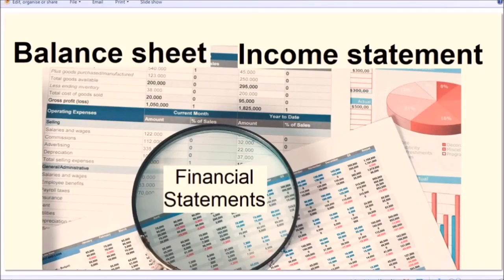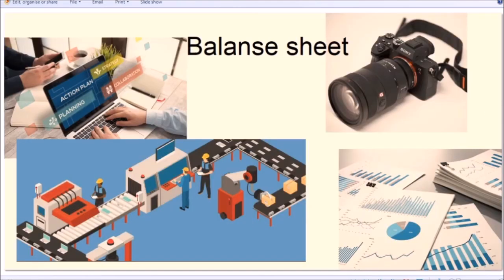The balance sheet and income statement are perhaps two of the most important financial statements for any company in any industry, whether it's a large company or small. In this video we're going to look at what is a balance sheet and an income statement. The balance sheet is a bit of a snapshot — a picture of what's going on in the company at a given moment in time, just like a photo shows you what's happening at that particular moment, not what has been happening over an hour or a day or a week.